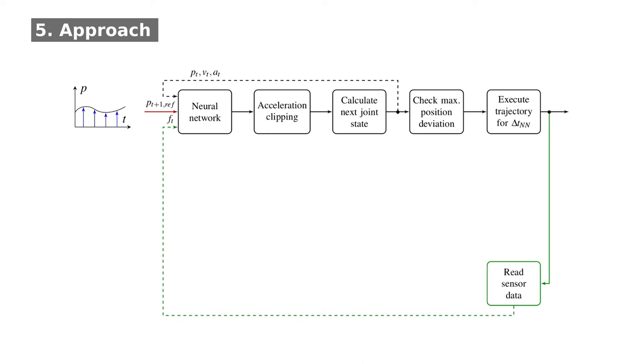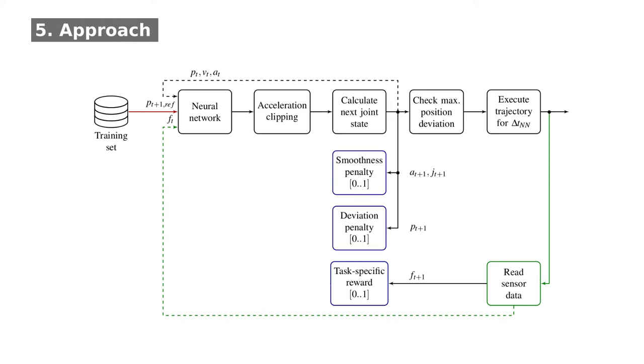During training, the sensor data is used to calculate a task-specific reward. The reward signal is multiplied with the deviation penalty, which ensures that the trajectory roughly follows its reference, and a smoothness penalty, which prevents jerky movements. The resulting reward is used to train the network via reinforcement learning.